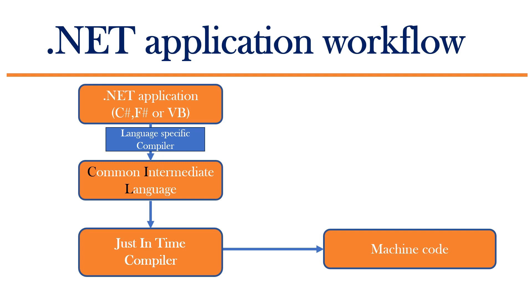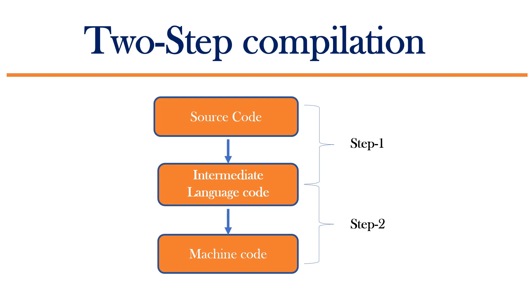In case of .NET applications, you can find two types of compilers. One is language-specific compiler and other one is Just-In-Time Compiler. Just-In-Time Compiler is a part of Common Language Runtime. In short, .NET application is compiled in two steps.